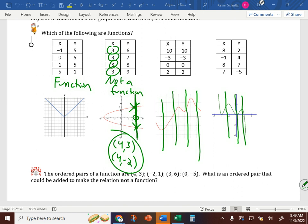Then the ordered pairs of a function are 4, 3, negative 2, 1, 3, 6, 0, negative 5. What is an ordered pair that could be added to make the relation not a function? I would like you to take the next five minutes to finish the page. If you all finish it, we'll play the number game.